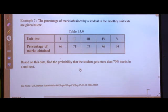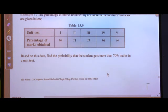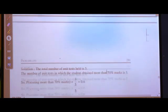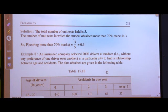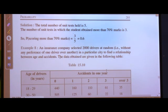Based on this data, find the probability that the student gets more than 70 percent marks in a unit test. The total number of unit tests held is 5. The number of unit tests in which the student obtained more than 70 percent marks is 3.